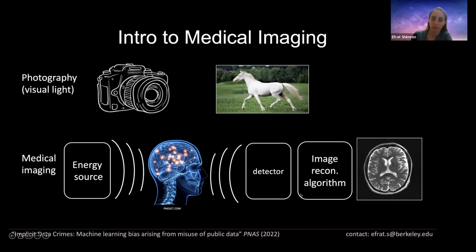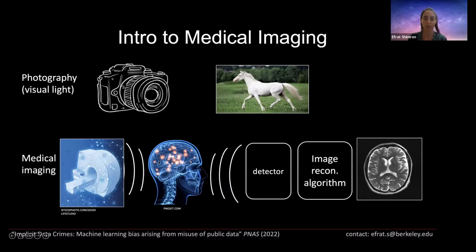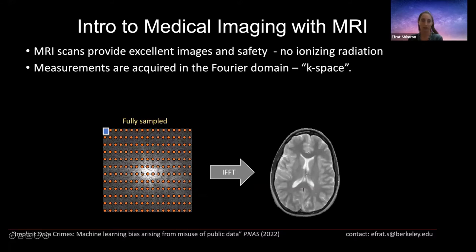We need algorithms called image reconstruction algorithms that take these measurements and decode an image from them. Today we'll talk about how to develop these algorithms using machine learning and how the data we use to develop them influences the final outcome. MRI is a wonderful imaging modality — it provides superb quality images of the human body and many different contrasts. But the downside is the long acquisition time.